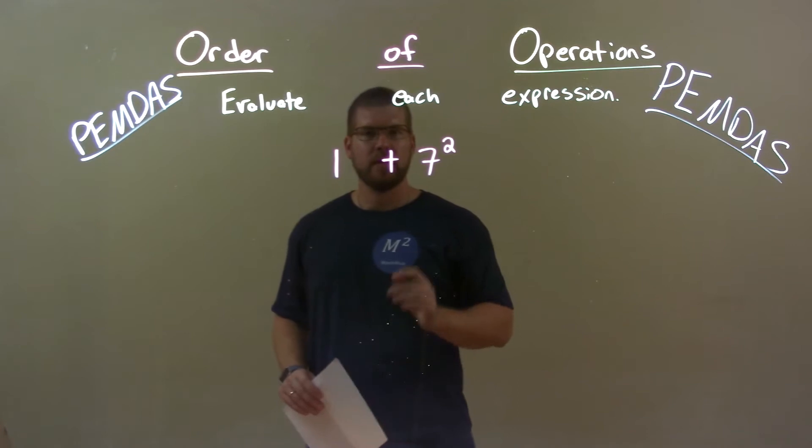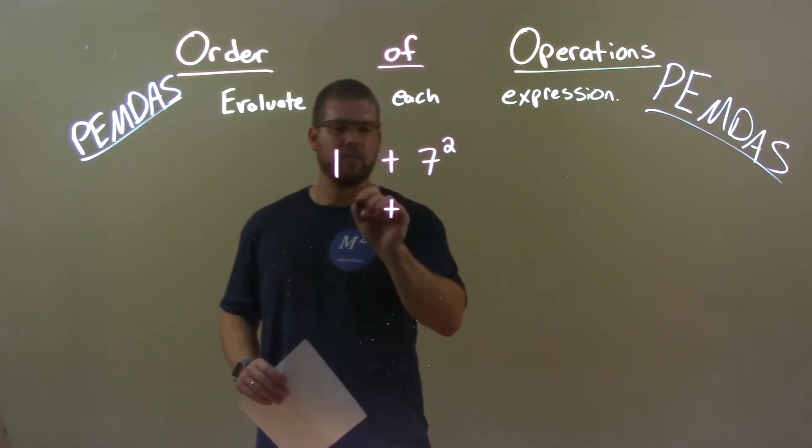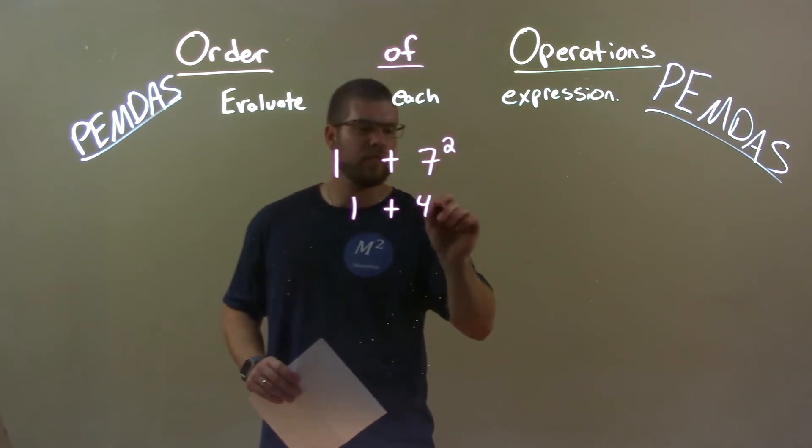Well 7 squared is 49 and we have to deal with the exponents first right here. So bring down the 1, 7 squared is 49.